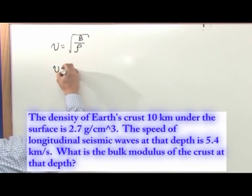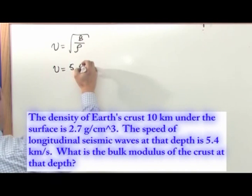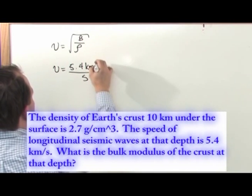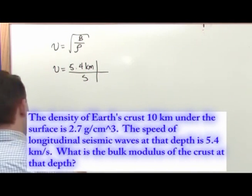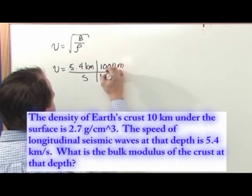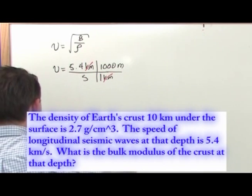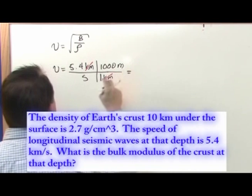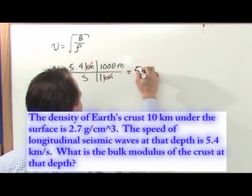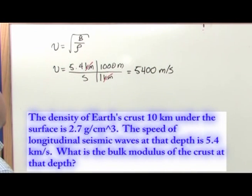For the velocity, we were given 5.4 kilometers per second and we always want to work in meters per second. So let's convert that. One kilometer is 1,000 meters. Kilometers cancel with kilometers, and the velocity 5.4 times 1,000 is going to be 5,400 meters per second.